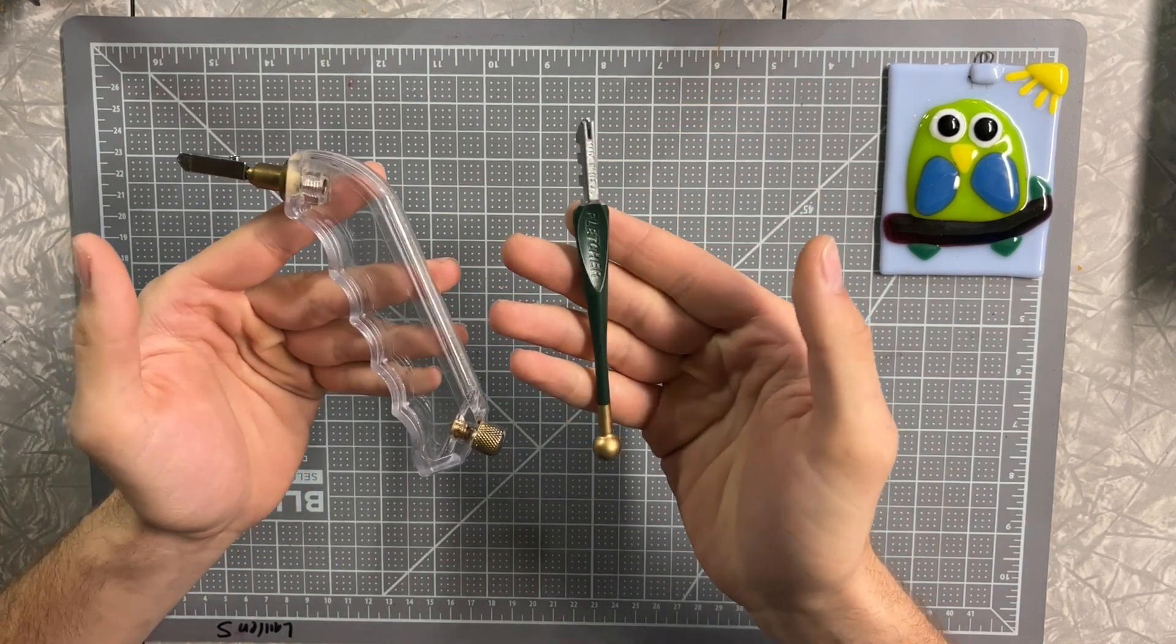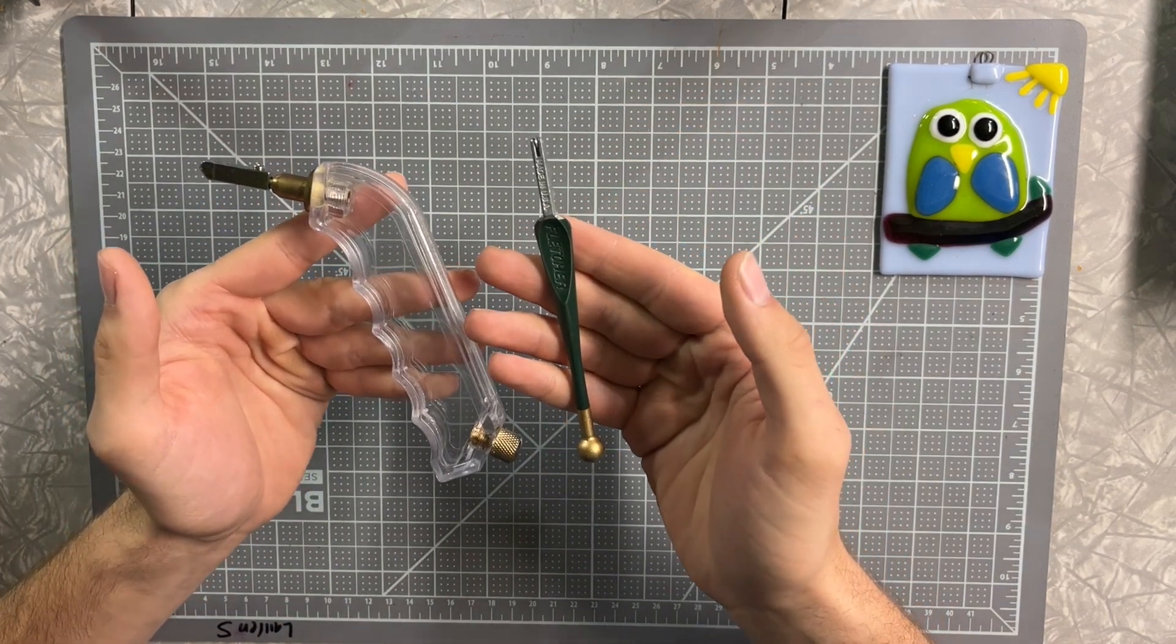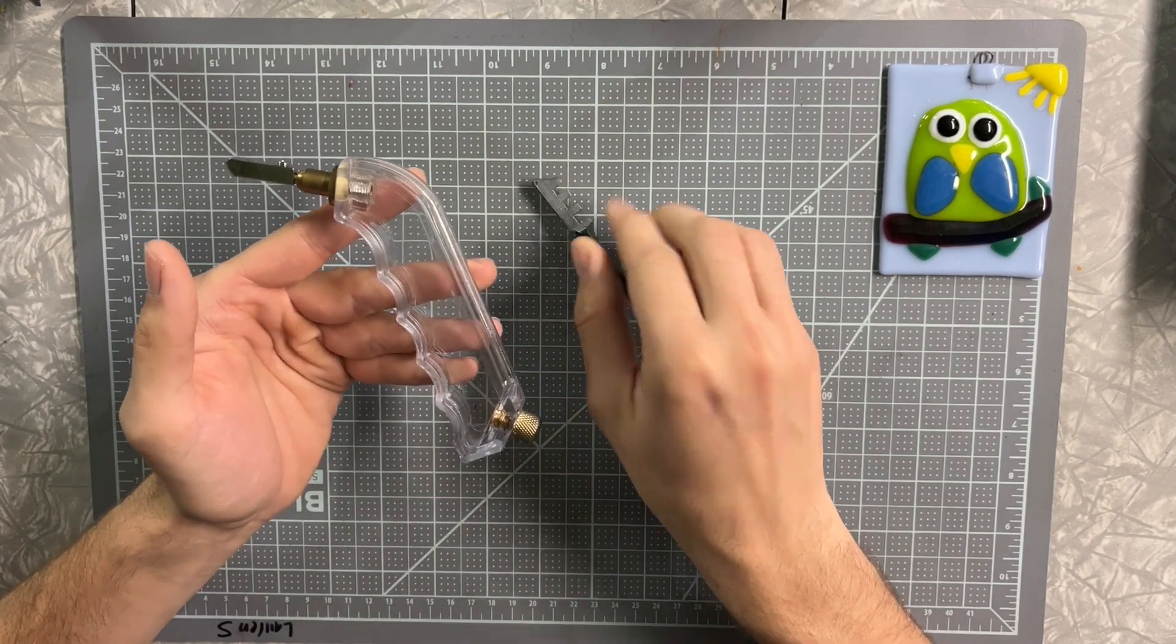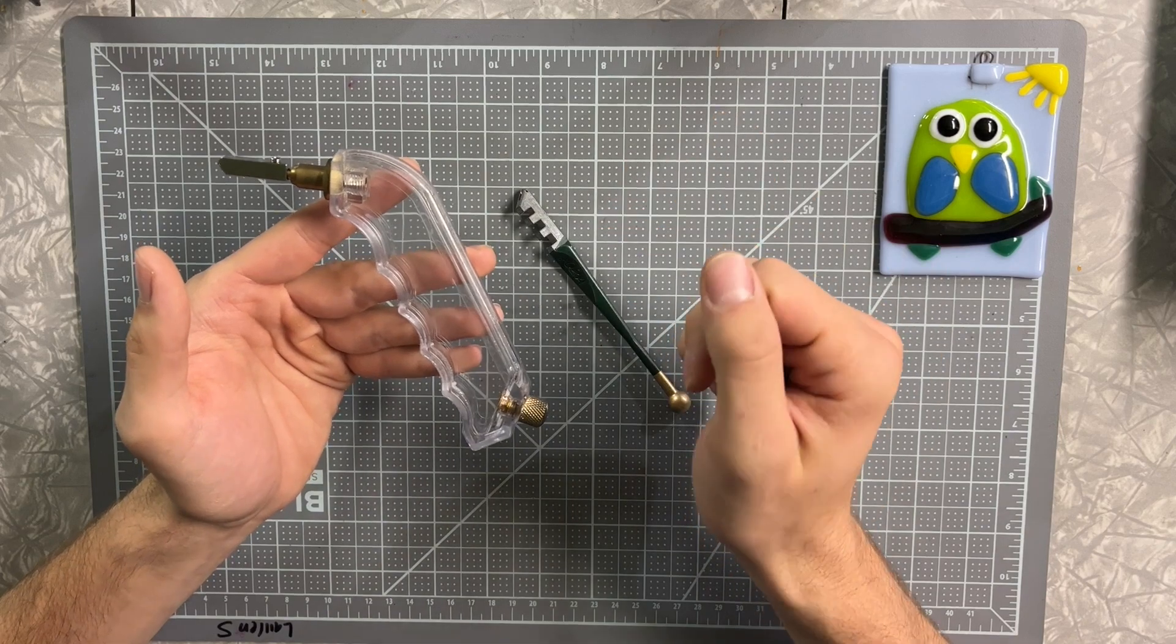I often use both types of glass cutters. I usually use the smaller one for more intricate details, and then I'll use the bigger one when I'm cutting larger sheets of glass.